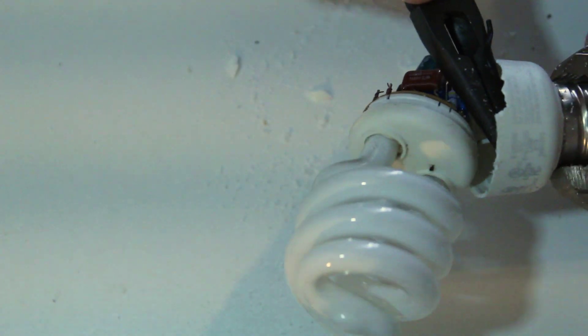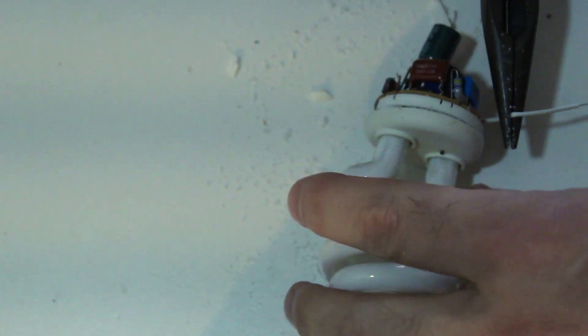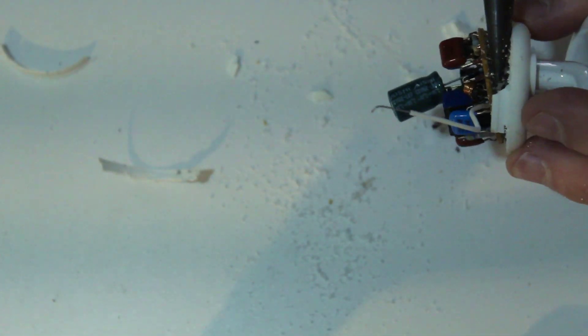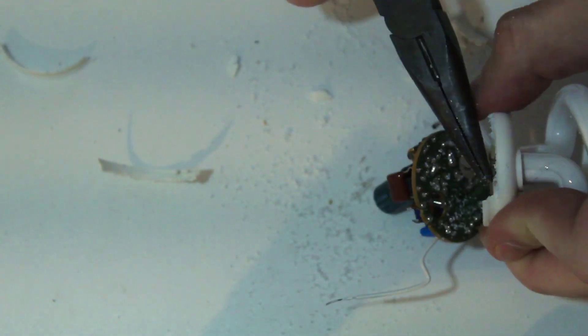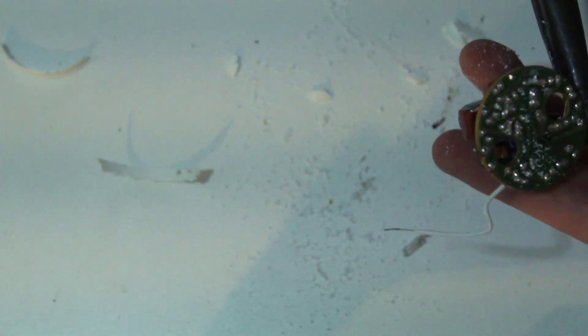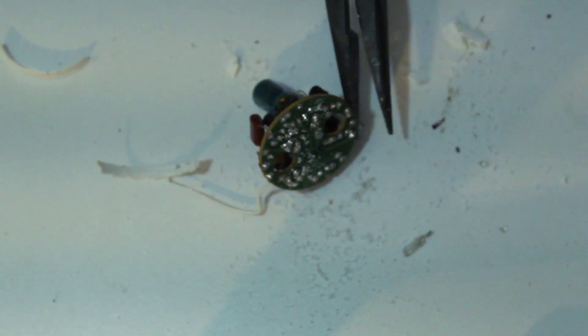Two wires connect it to where it screws in, pull those out. These next two wires are connected to the bulb itself, so be careful, you don't want to break the bulb. There is mercury vapor in there, and also be sure to dispose of these carefully.